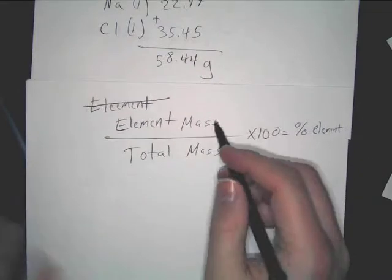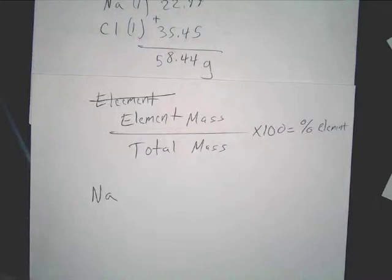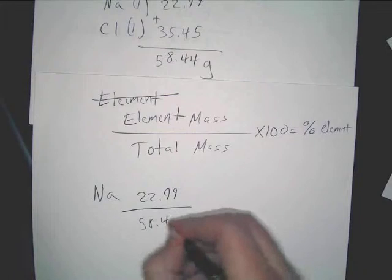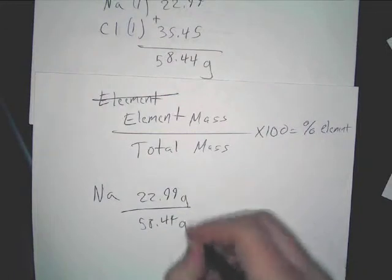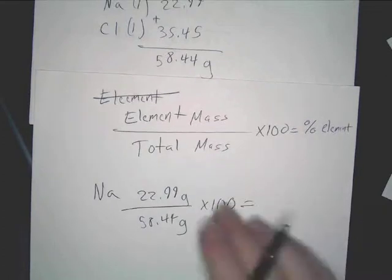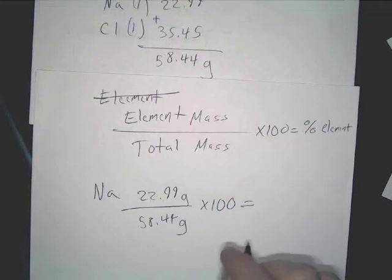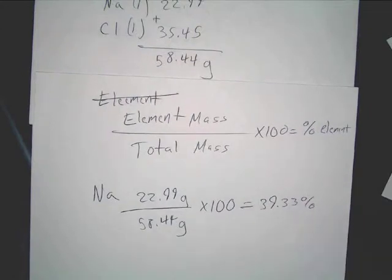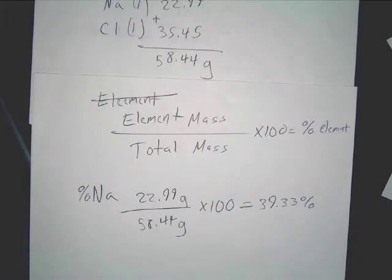For element mass, we'll do sodium first. You know the mass is 22.99. You're going to divide by 58.44. You can put grams on top and bottom — they cancel out, so it's unitless. Multiply by 100 and you end up with 39.33%. I would always suggest rounding to the hundredths place. Your goal is to get these things to add up to 100% or as close as possible.